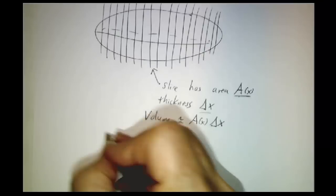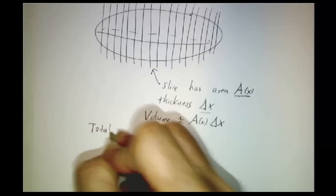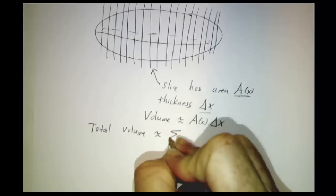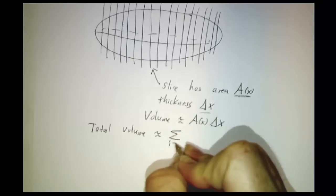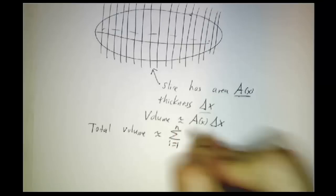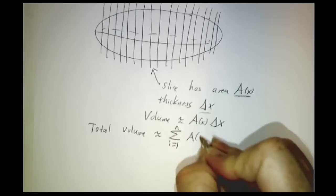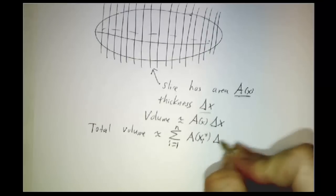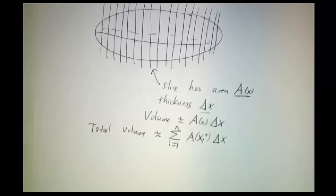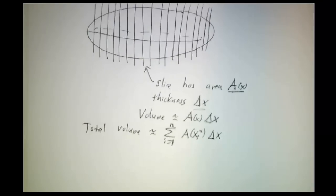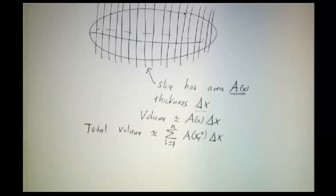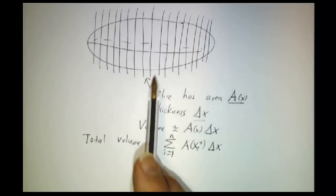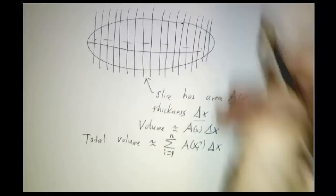So that means that our total volume is approximately the sum over all of the slices of the area of the i-th slice times the thickness of the i-th slice. And this gets better and better and better as we slice things thinner and thinner and thinner because after all, if you take a slice, take this slice,